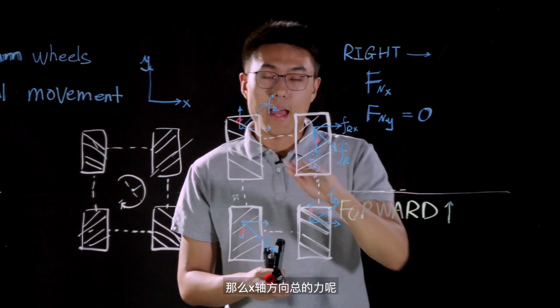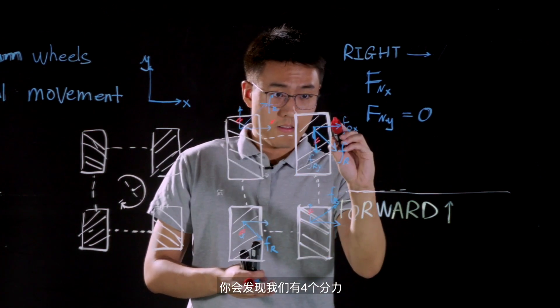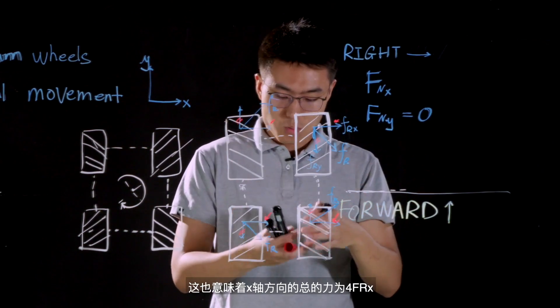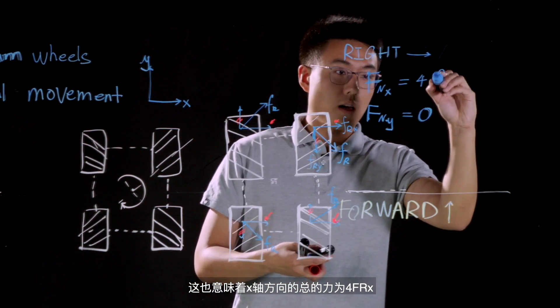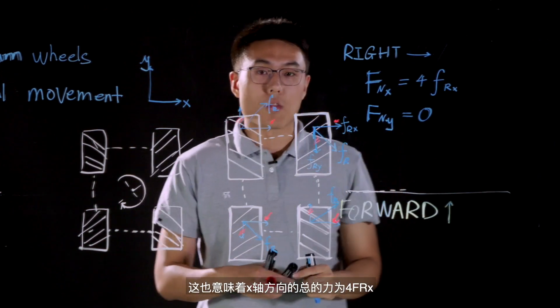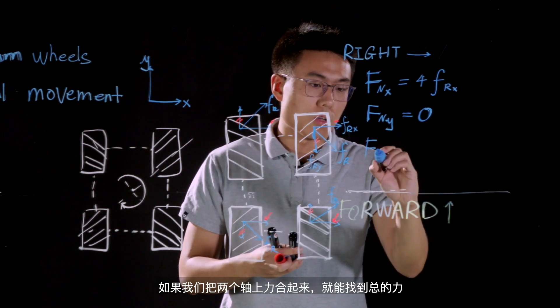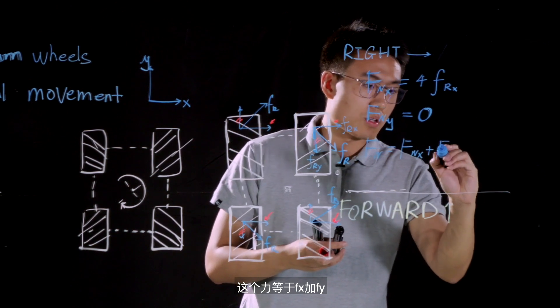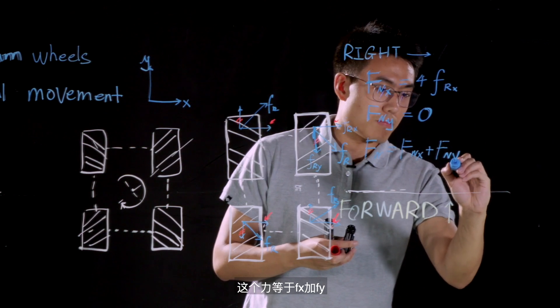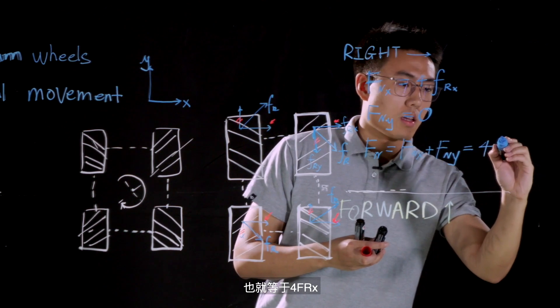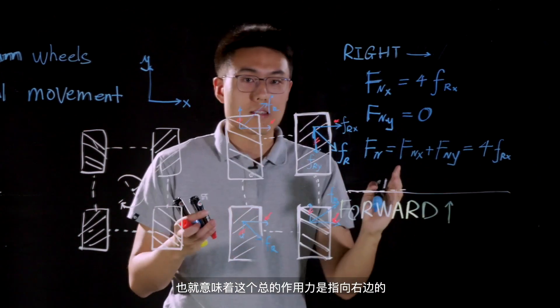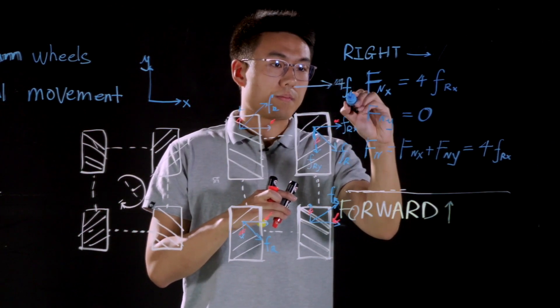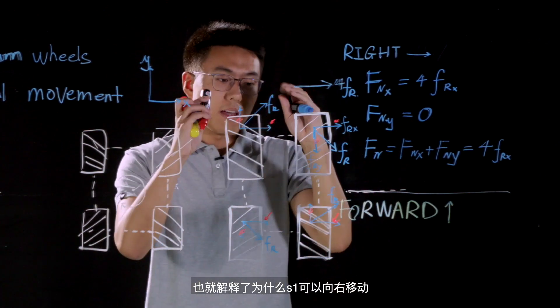And for net force on X axis, let me say that we have four component forces with same magnitude in same direction. That's why we have four FRX as our net force on X axis. Then we can combine these two net force to derive the overall net force. That is, net force equals to FNX plus FNY, that is equal to 4RX. Which means the overall net force is pointing to right. And that explains why our S1 can move in right direction.